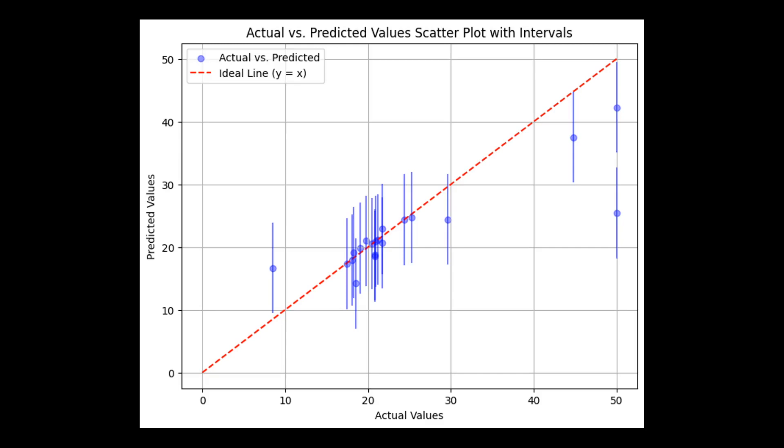With this visualization, a predicted interval covers the actual value when it intersects with the diagonal line y equal to x. Looking at the plot, you will notice that this happens for 16 out of the 20 validation points, accounting for 80 percent of them. Now you might be wondering: wait a minute, our confidence level is set to 90 percent, so shouldn't we expect at least 90 percent of the validation points to fall within the predicted intervals? Why is it only 80 percent?